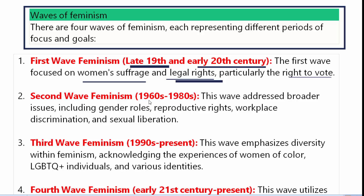Second wave feminism आया 1960s में और 1980s में end हुआ। इसमें feminism के broader issues को deal किया गया था, जिसमें शामिल हैं: Gender Roles, Reproductive Rights, Workplace Discrimination, and Sexual Liberation.